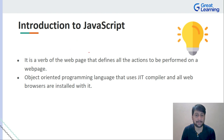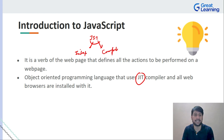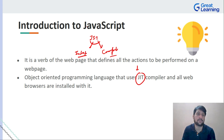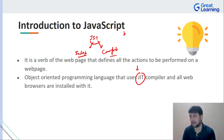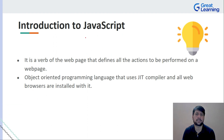For example, if you want to add a button and whenever you click on it, an image of a person appears along with their intro — those actions you perform with JavaScript. It is an object-oriented programming language that uses a just-in-time compiler, which combines the best of both an interpreter and a compiler. JavaScript can be run on browsers, and all browsers are installed with it.